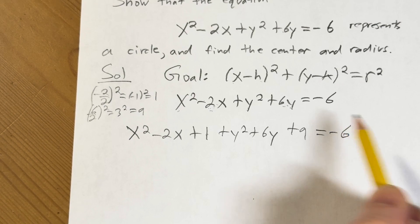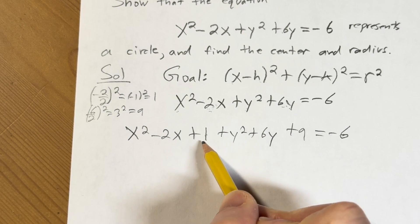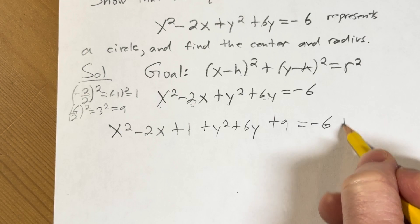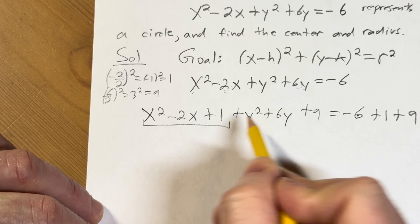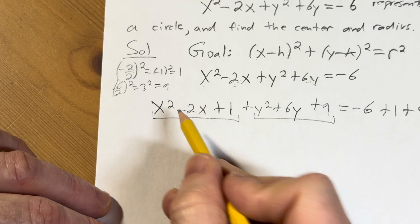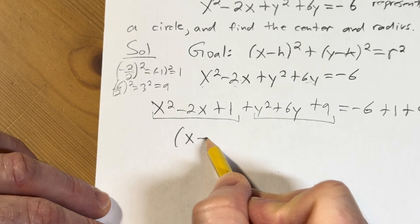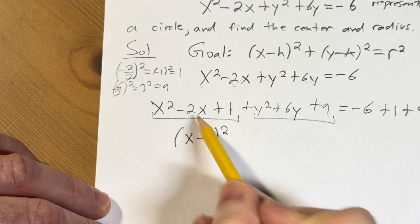Here's a negative 6. Now we can't just put numbers here. What you do to one side you have to do to the other, right? So we're going to add a 1 here and we're also going to add a 9. This and this will magically factor.